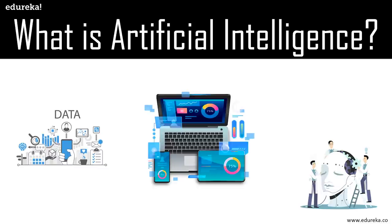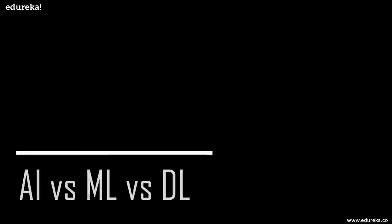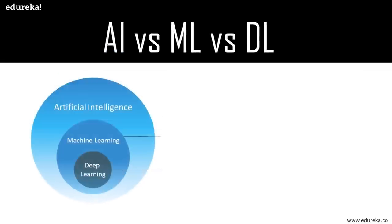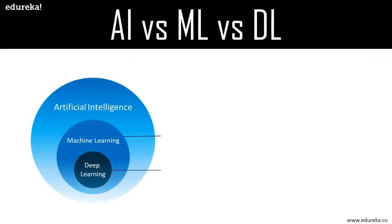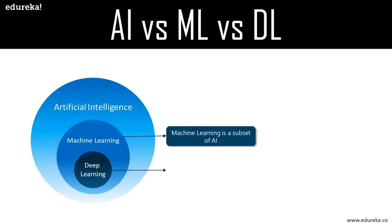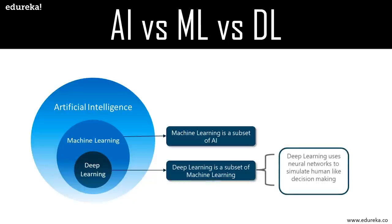People often have confusion among the terms artificial intelligence, machine learning, and deep learning. AI, ML, and deep learning all come under the roof of data science. Data science is the extraction of knowledge from data using different techniques and algorithms. AI is the technique which enables machines to mimic human behavior. Machine learning is a subset of AI that uses statistical methods to enable machines to improve with experience. Deep learning is a subset of machine learning that makes computation of multilayer neural networks feasible and uses neural networks to simulate brain-like decision making.